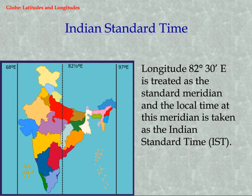Indian Standard Time. Longitude 82 degrees 30 minutes East is treated as the standard meridian, and the local time at this meridian is taken as the Indian Standard Time, IST.